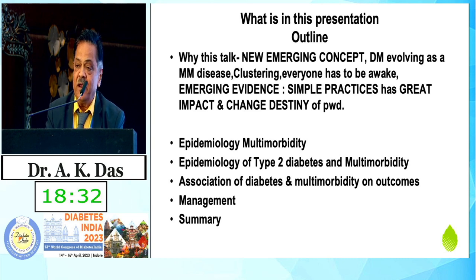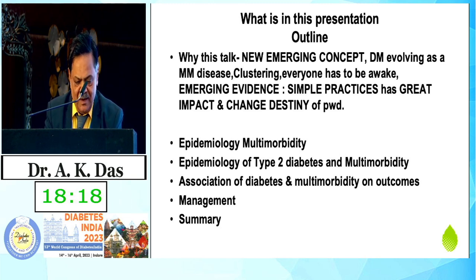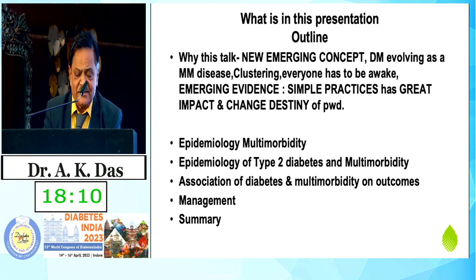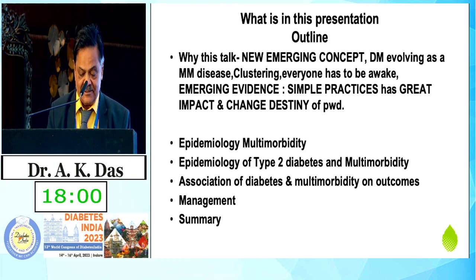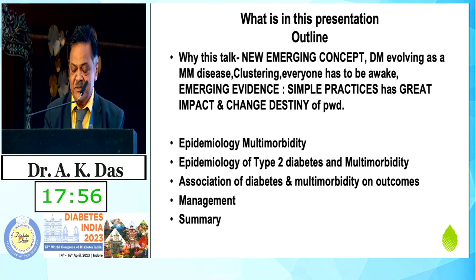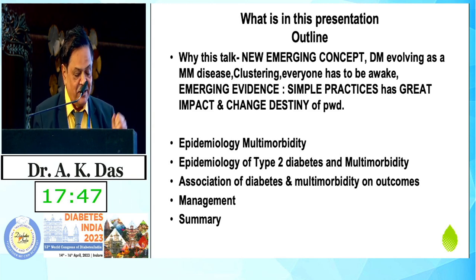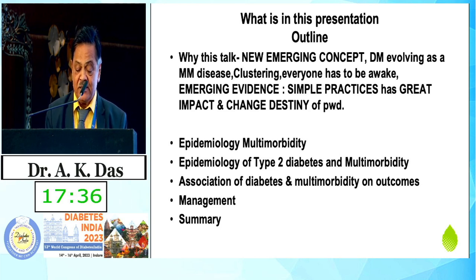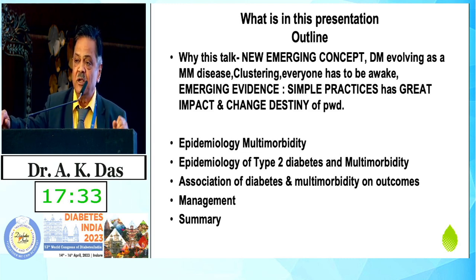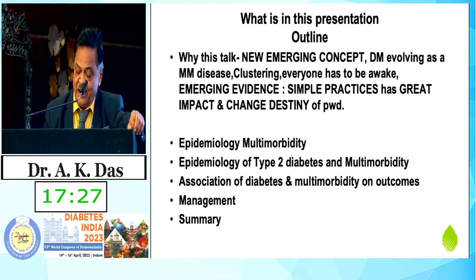Diabetes mellitus today is evolving as a multimorbid disease, and we discussed about the clusters. I must also use clustering of diabetic multimorbidity — you will see how the clustering is true. There are emerging evidences, alluded to in this meeting again and again, that simple practices have a great impact on this multimorbidity. That's my take-home message and this can change the destiny of persons with diabetes. I have a brief schedule: we'll discuss the epidemiology of multimorbidity as a whole, not only for diabetes; multimorbidity in type 2 diabetes; its association with outcomes; how to manage it; and then a summary.